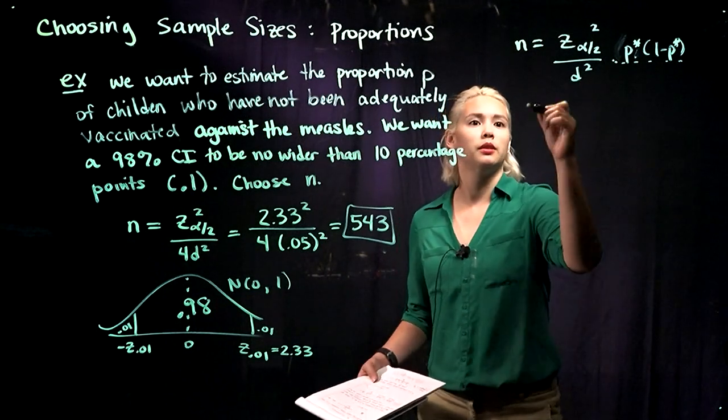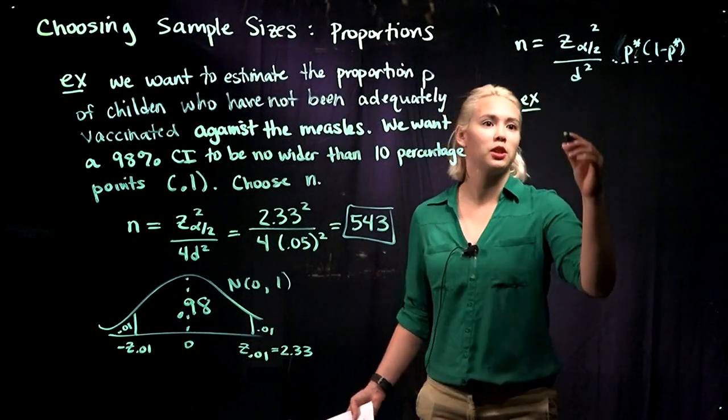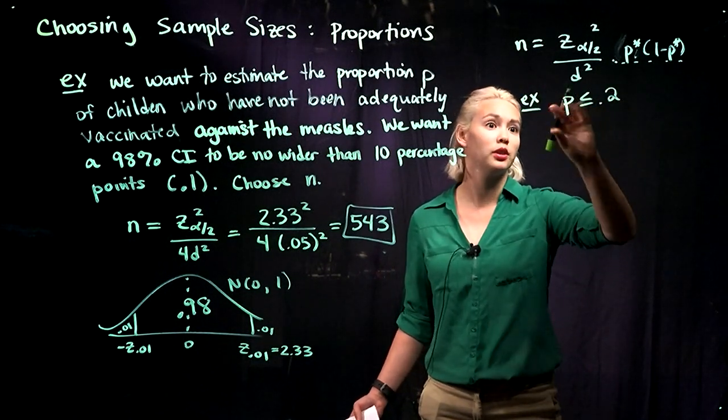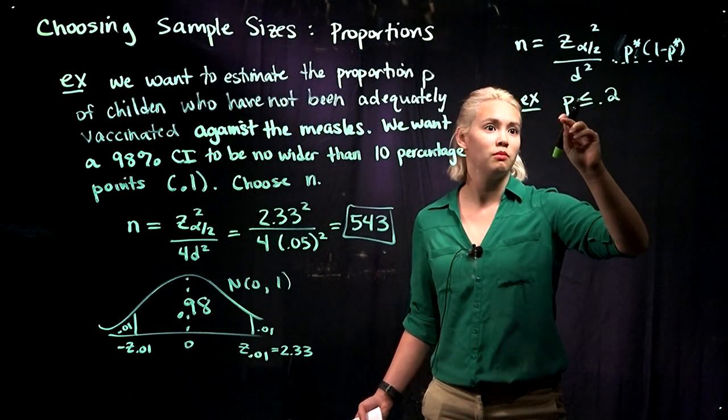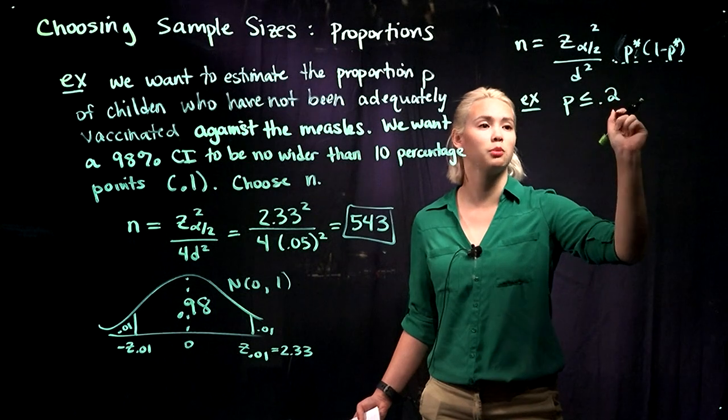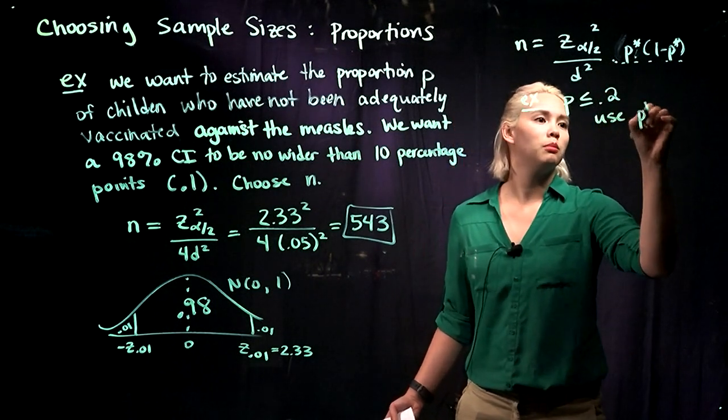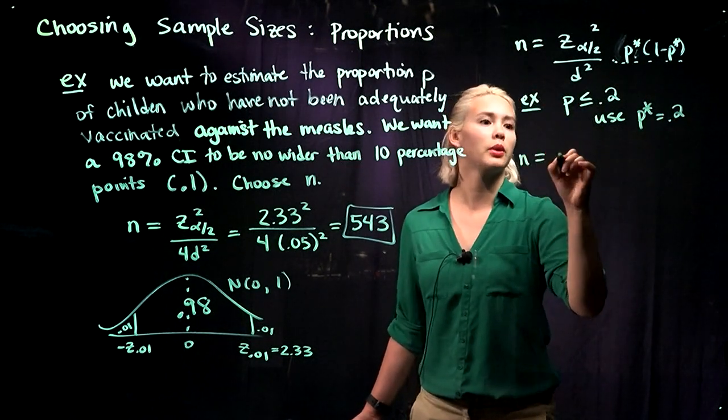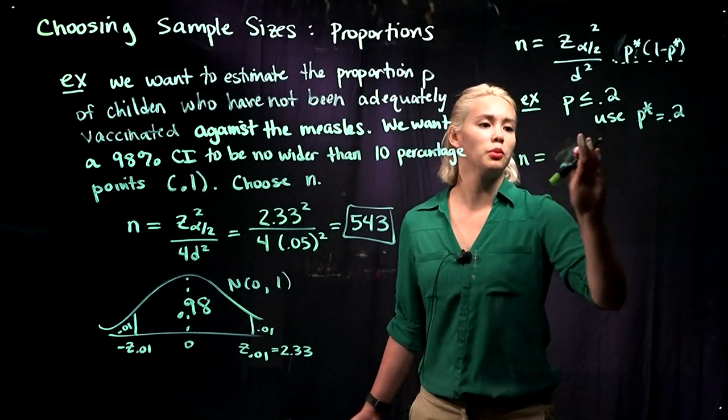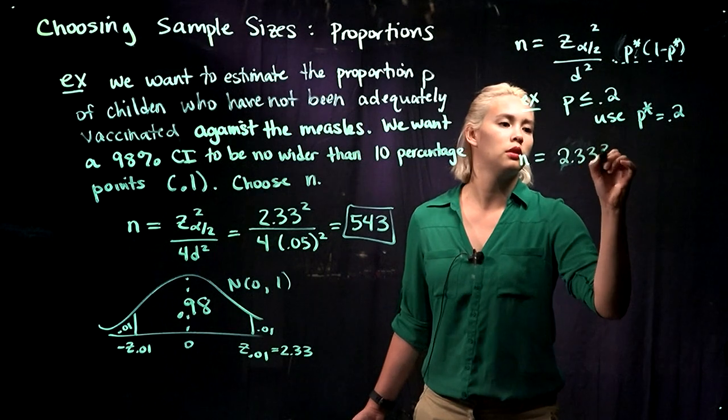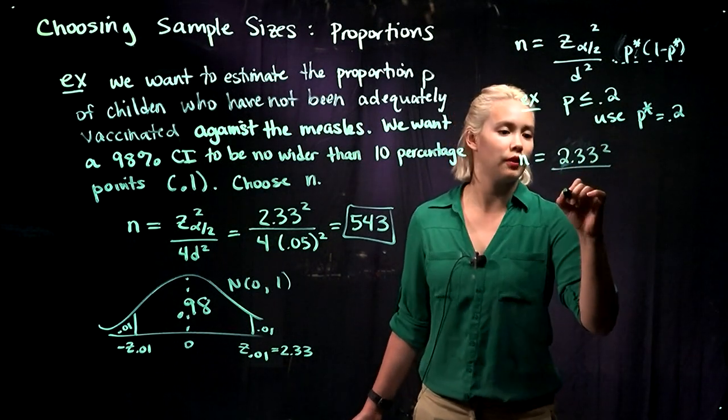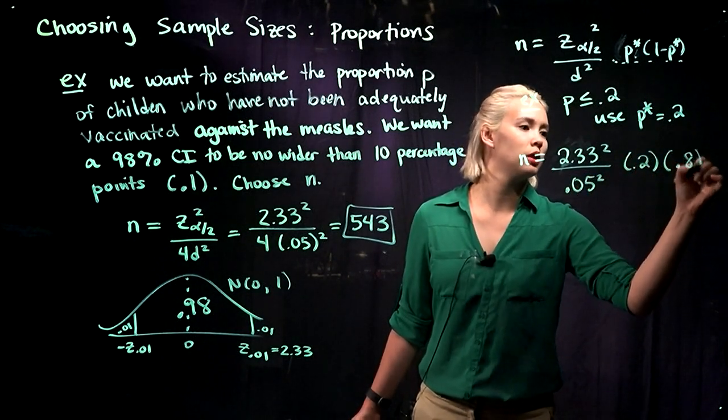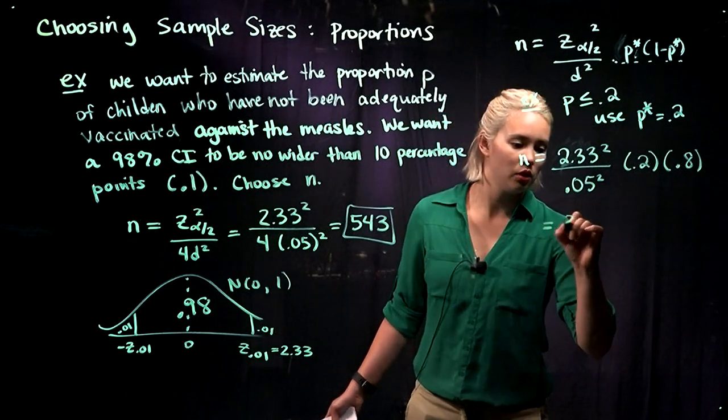Say in this example, we have information that p is no bigger than .2. Then we can use that. So now under this new worst case scenario, our proportion that we're going to use is .2. So we're going to use p star of .2. We can crunch all these numbers again. We still have z alpha over 2 being 2.33, we have d squared still being .05 squared, and now we have .2 times 1 minus .2. And so we get n being 348.